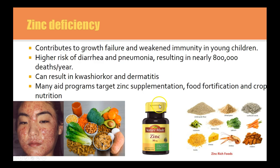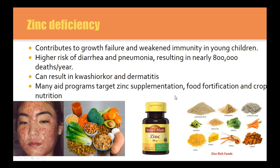Zinc deficiency attributes to growth failure and weakened immunity in young children. It is zinc — not vitamin C — that weakens your immune system. You have a higher risk of diarrhoea and pneumonia with a zinc deficiency, and it can also cause dermatitis. Zinc supplementation, food fortification and crop nutrition are important. If zinc-rich foods don't exist in your local community, supplementation is appropriate.